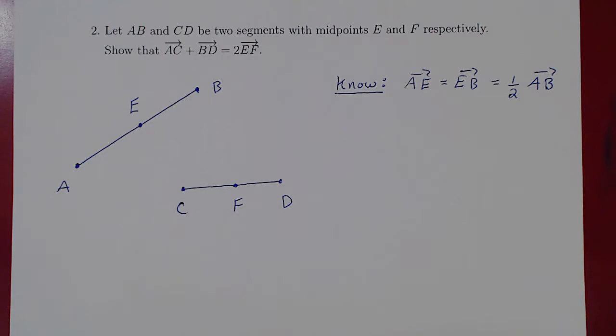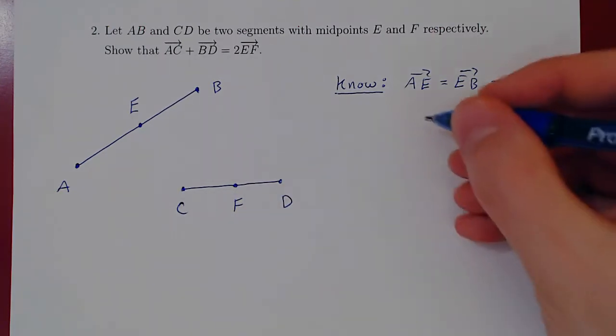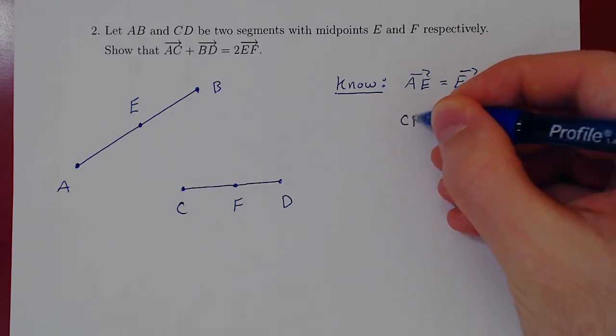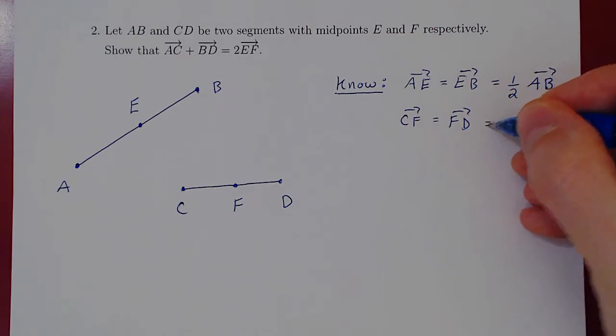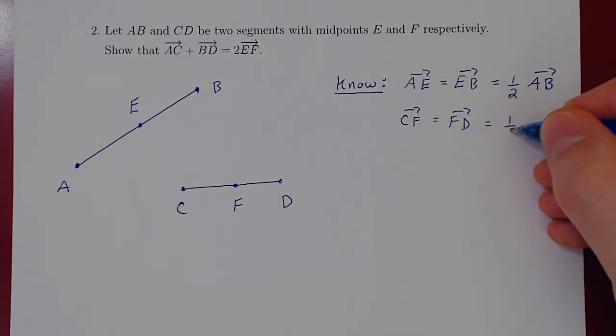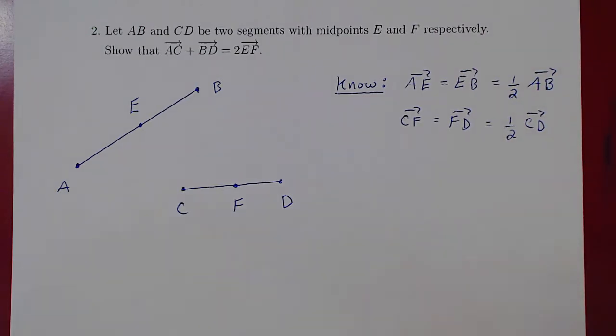The same goes for CD and F being the midpoint of that segment. So the vector CF has to equal the vector FD, which in turn has to equal one half of vector CD. And that's all we know.